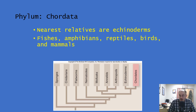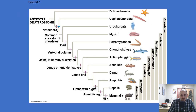Within the chordates, the fish, amphibians, reptiles, birds, and mammals — all of those critters you often think of when you think of animals — are present. Here is a cladogram of chordates.